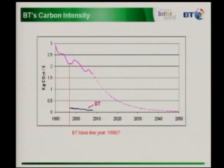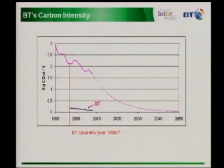So what does that mean for us? This is BT's carbon emissions in terms of intensity — our intensity per unit of value add compared to that GDP line. We're much lower, not because of the action we're taking, but because we're fortunate enough to be in an industry that is not energy intensive. The reduction you can see there is due to the actions we've taken — that 60% reduction you saw earlier.